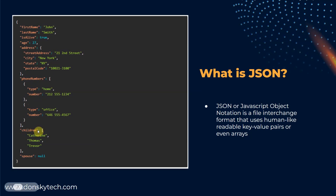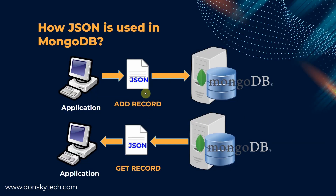The children field is what we call an array that contains individual strings. When interacting with the MongoDB database from our application, it is necessary to work with the JSON format. If you want to add a record to your MongoDB database, you would need to pass a JSON structure from your application. On the other hand, if you are retrieving information from your MongoDB database, then you would receive a JSON structure as well.